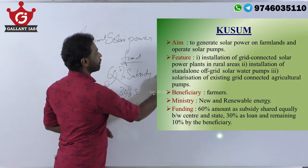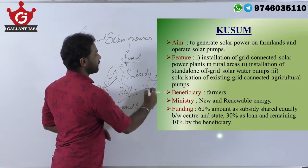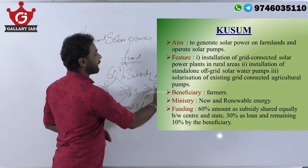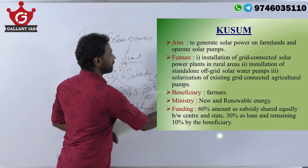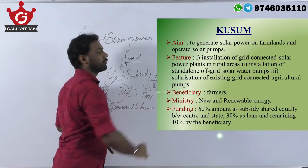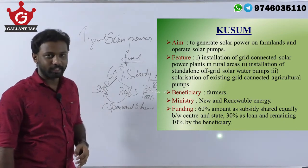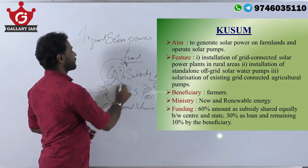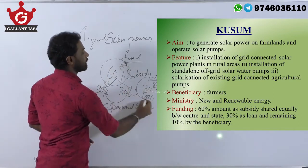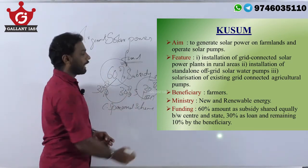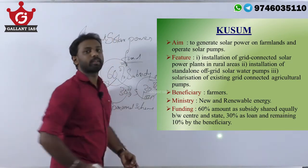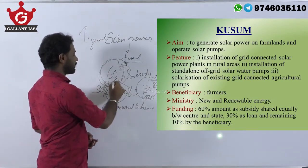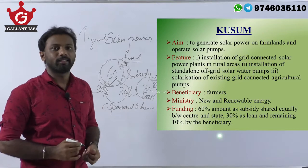Out of the remaining 40%, 30% is provided as a loan, and the farmer has to bear the remaining 10% of the initial investment. So in summary: out of the total investment, 60% is subsidy, 30% is loan, and 10% is to be borne by the farmer. Out of the total subsidy, it is equally shared between center and states.